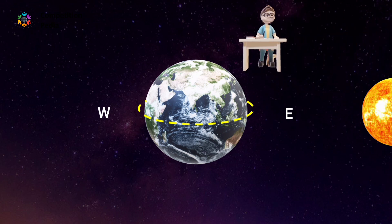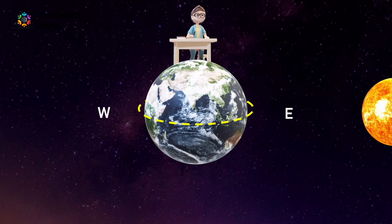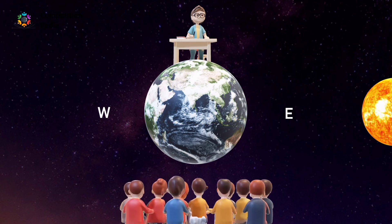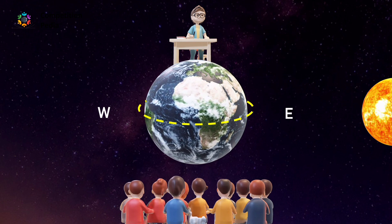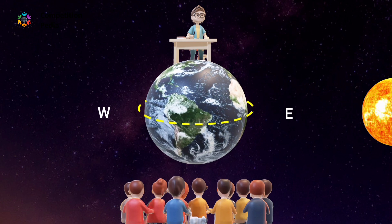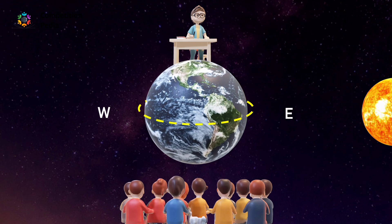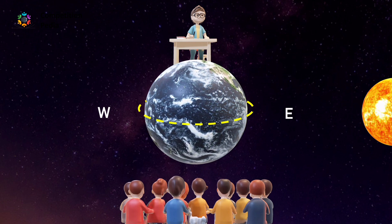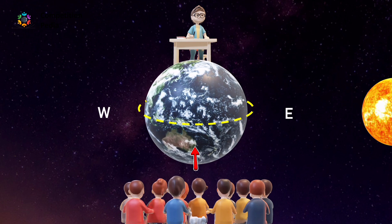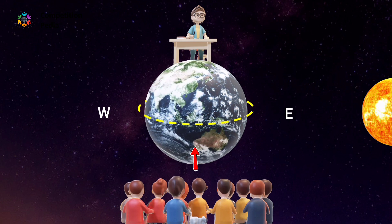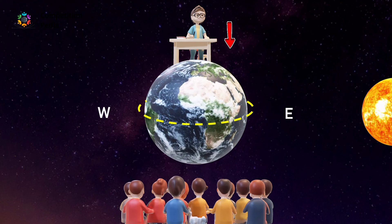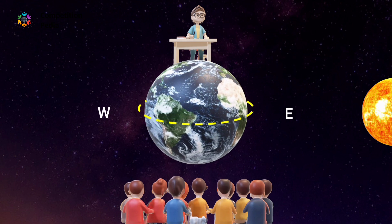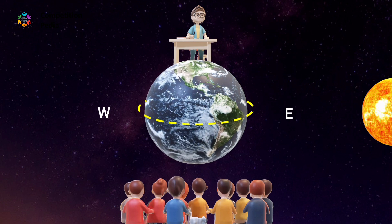I, your teacher, am behind the earth delivering this lecture, and you are right in front of me. Between you and me lies our earth, rotating from West to East. So far there is no issue in understanding, right? But the actual magic starts here. From your perspective the earth is spinning from West to East — but what about from my perspective, sitting behind the earth? Have you ever tried to look at the rotational direction from my side?